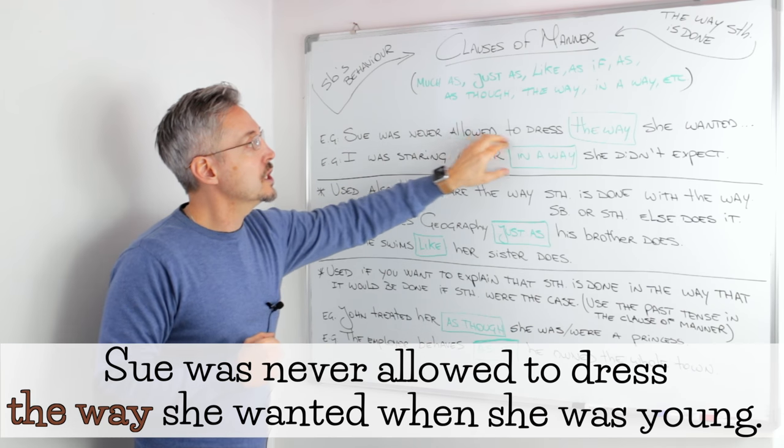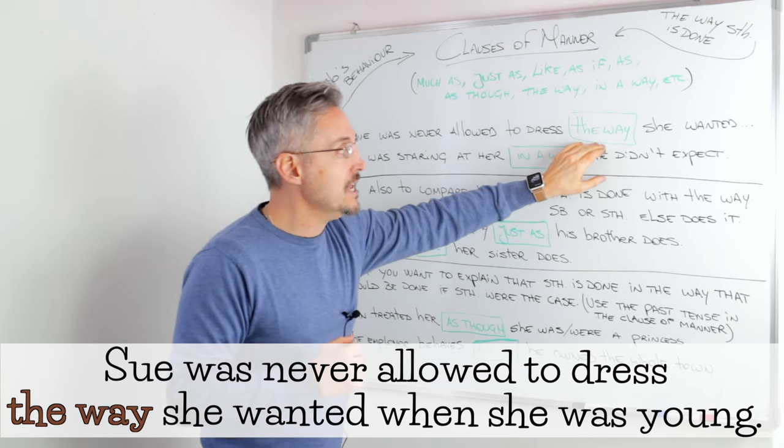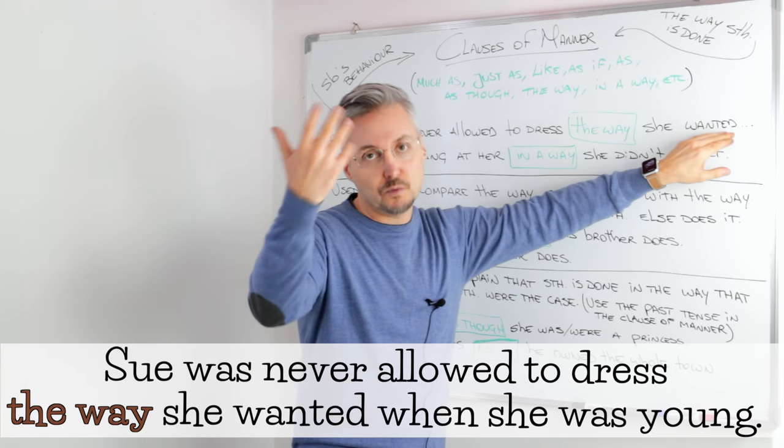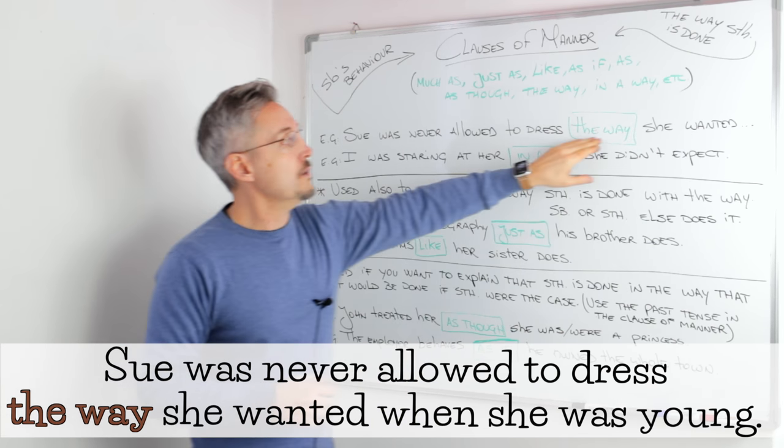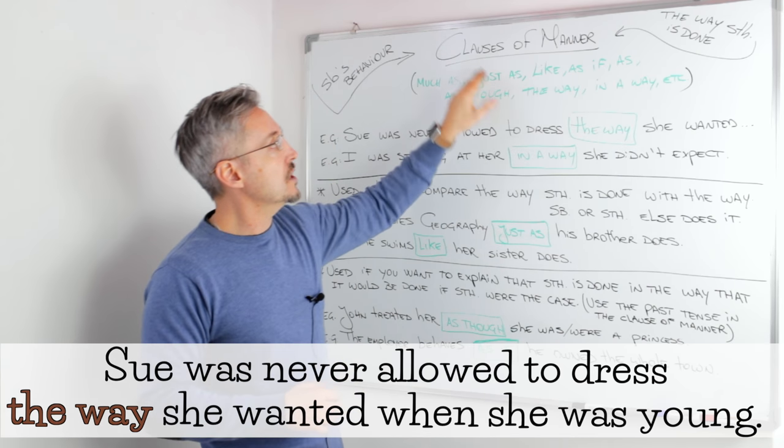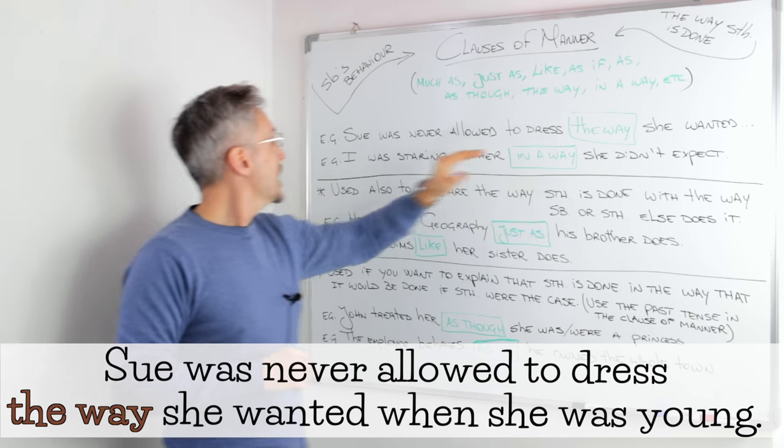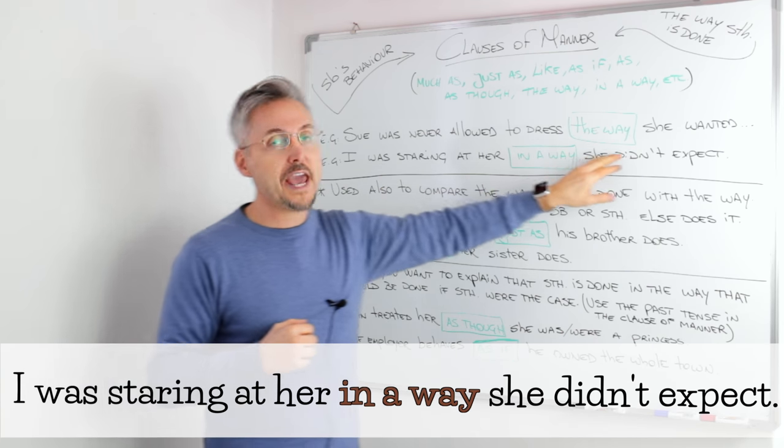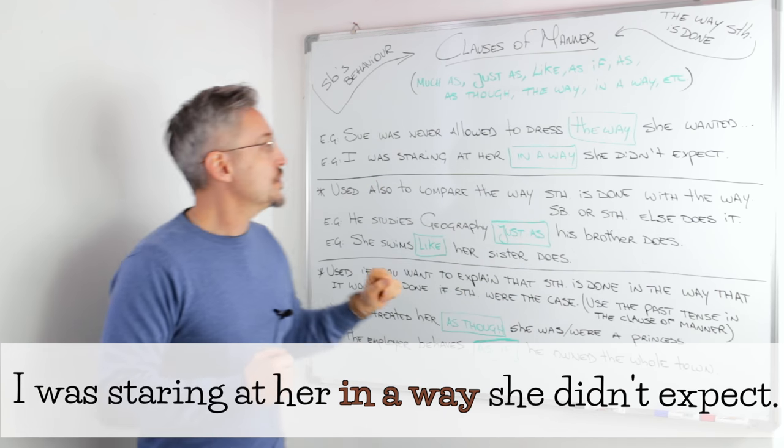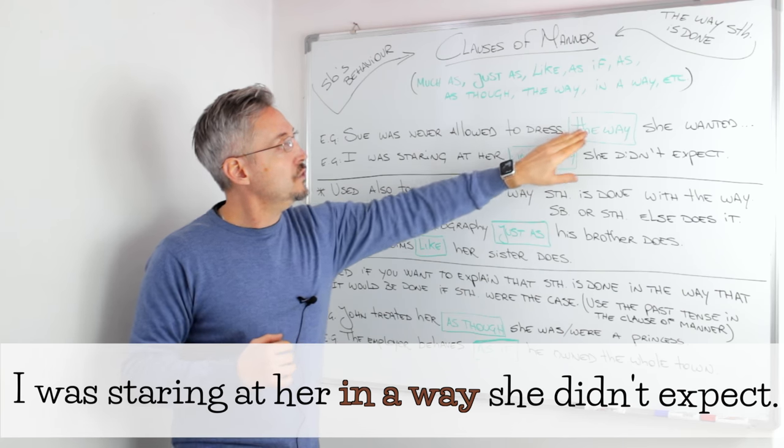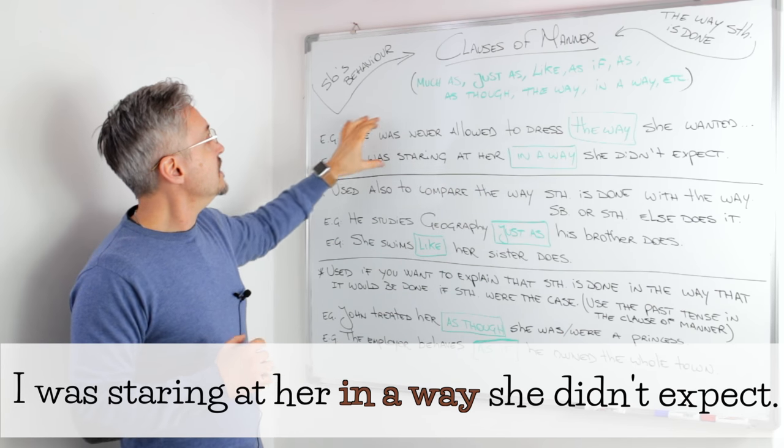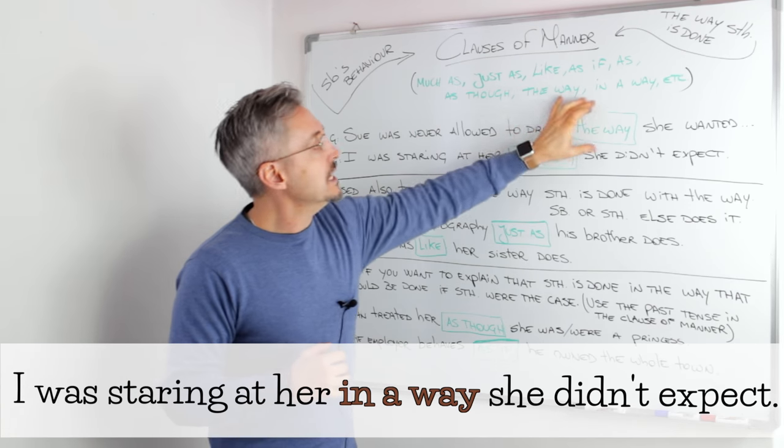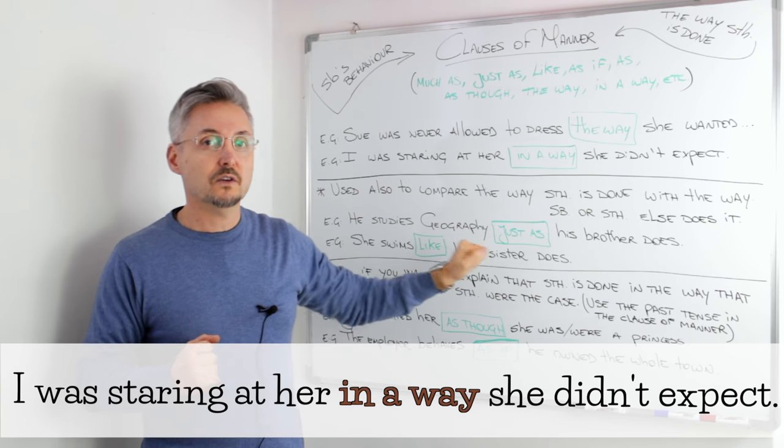Sue was never allowed to dress the way she wanted when she was young. Now, I was staring at her in a way she didn't expect. So, we have here the two clauses of manner that describe the way something is done.